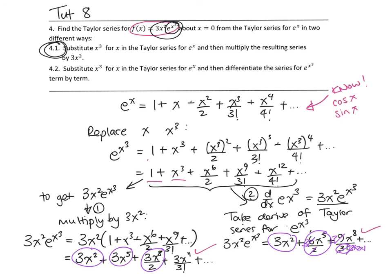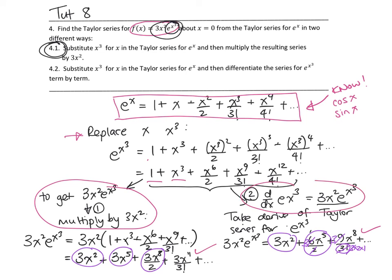That shows there are different ways of getting the Taylor series. You don't always have to do the whole taking the derivative thing. If you know your basic Taylor series, you can use replacement to get a more complicated version and then either multiply by terms or take the derivative. And although we didn't look at it in this example, you could also integrate if you wanted.